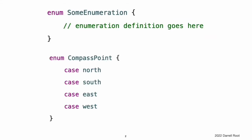An enumeration defines a common type for a group of related values and enables you to work with those values in a type-safe way within your code. If you are familiar with C, you will know that C enumerations assign related names to a set of integer values.